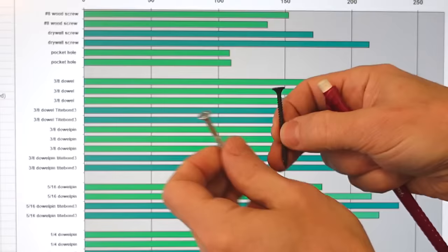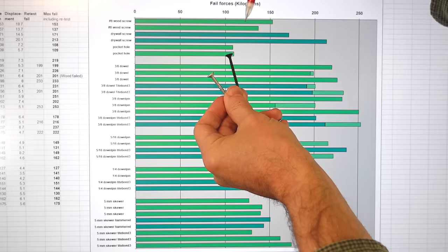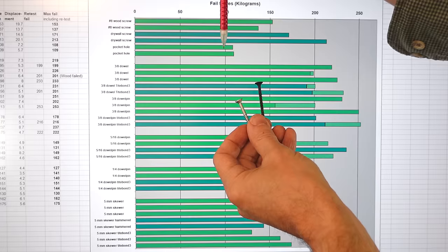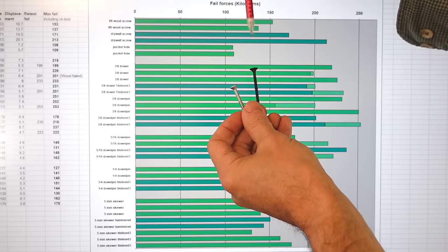Whereas, the drywall screw, that's these ones here did better because that head is harder to pull in. But, most of these screws, even before they failed there was a gap that opened up. So, at 80 kilograms, we could see the number 8 wood screws and the pocket holes showing a gap. Whereas, with the drywall screws it was a bit later, but still this ultimate fail strength isn't really that useful because there's quite a gap already there.